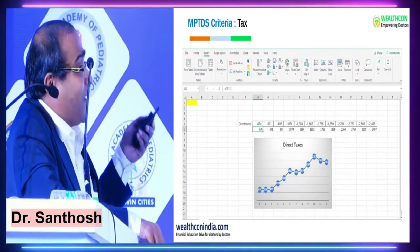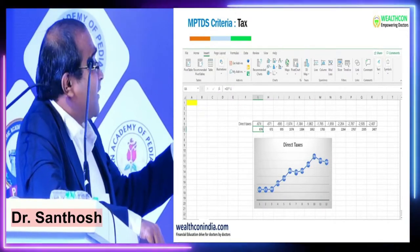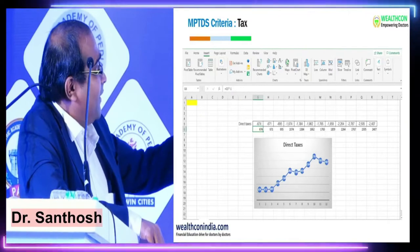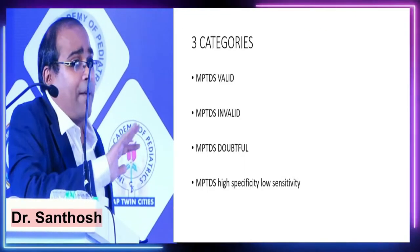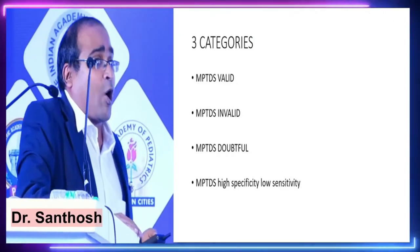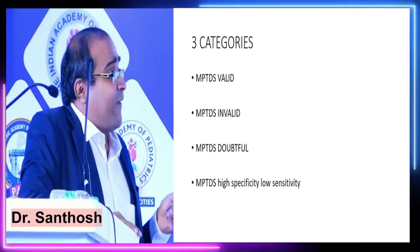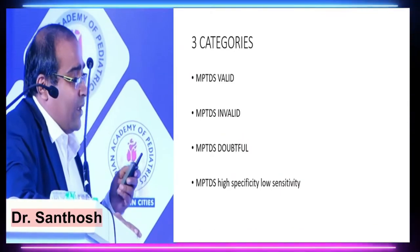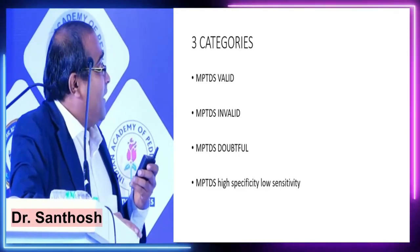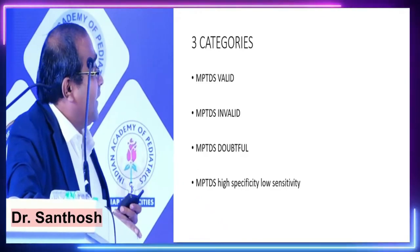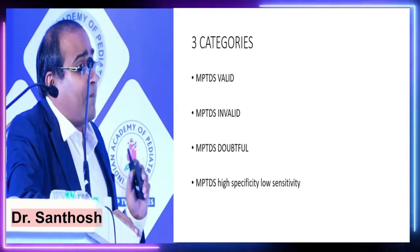This was the visual method. Another method is via Excel — copy the data, paste it in an Excel sheet, insert the graph, and you will see taxes increasing. Once we apply the MPTDS criteria, stocks fall into three categories: MPTDS Valid, MPTDS Invalid, or MPTDS Doubtful. MPTDS Valid means all five criteria are met — market cap more than 10,000 crore, and tax, dividend, sales, and price are all increasing. We want only MPTDS Valid companies in the beginning.